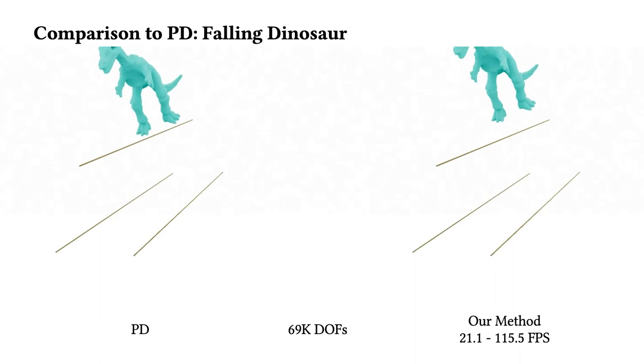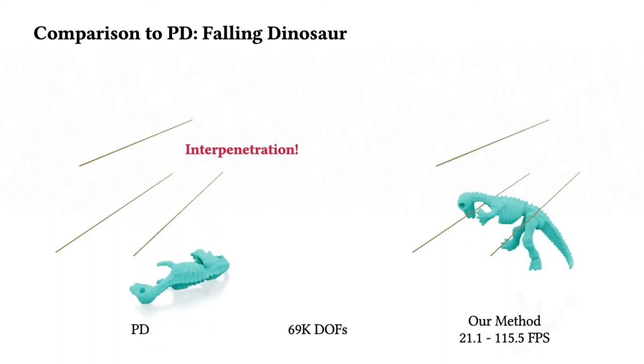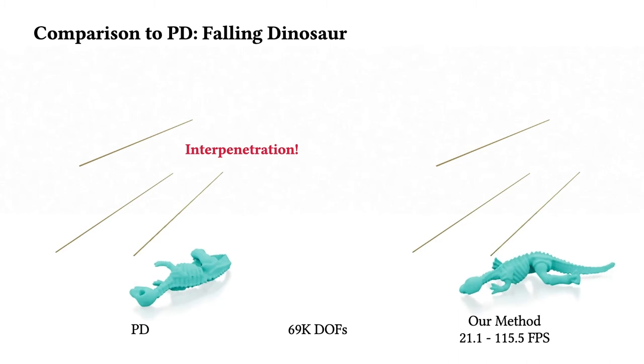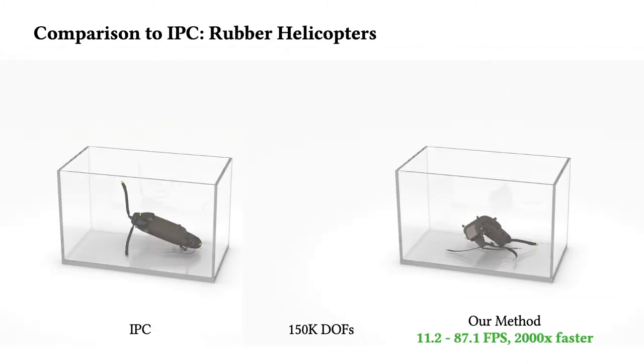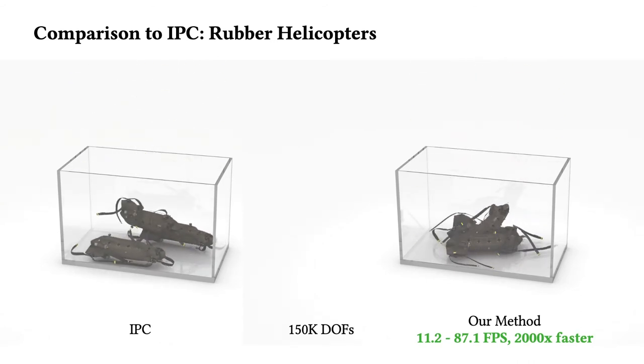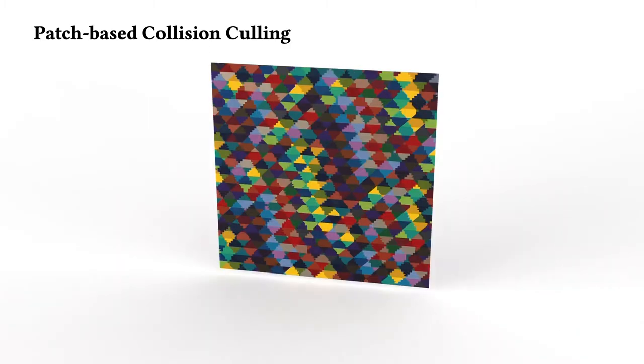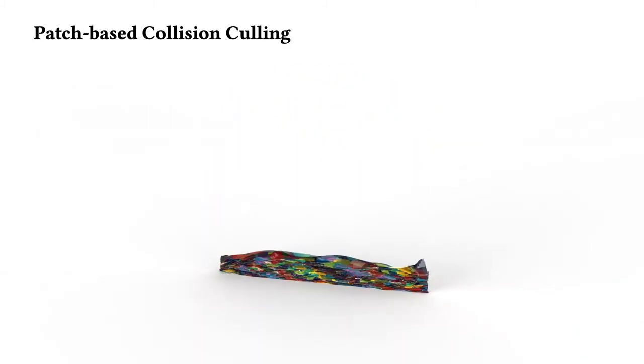For this falling dinosaur example, where PD fails due to interpenetration between the dinosaur and the thin rod, our method can robustly capture the intricate dynamics in real-time. Compared to IPC, our method produces similar high-quality results but with more than 2,000 times speed-up. This is not possible without our efficient CCD and patch-based collision culling on GPU.